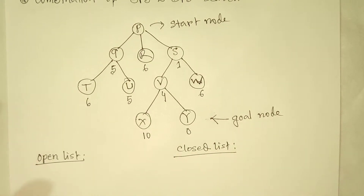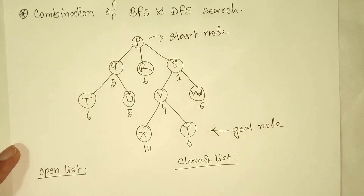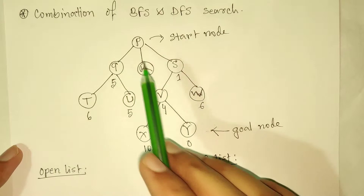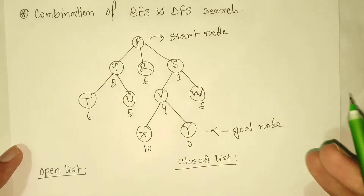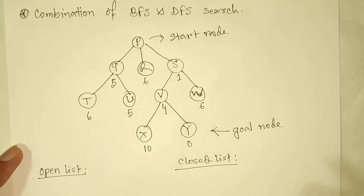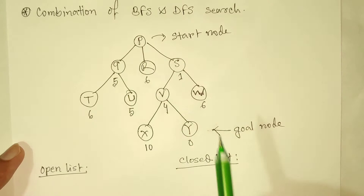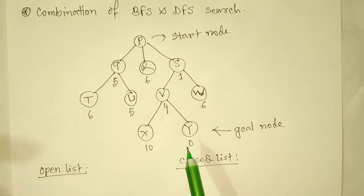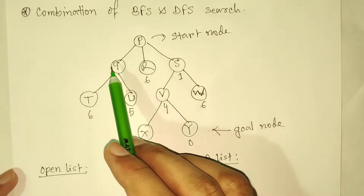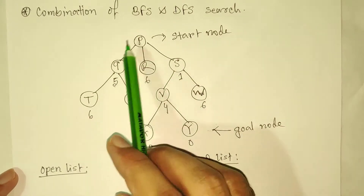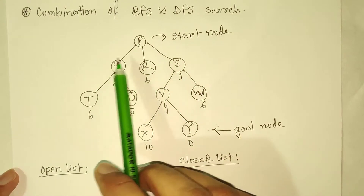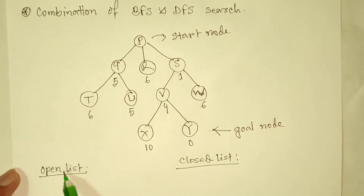The closed list means when we visit a node we add that node into the closed list. After visiting a node, if we find successors we can go to, those successor nodes will be added into our open list. For example, if we visit P, then P will be added into our closed list because we will not visit that node again. After visiting P we can see that we have opened three paths for visiting Q, R, and S, so those three nodes are added to our open list.